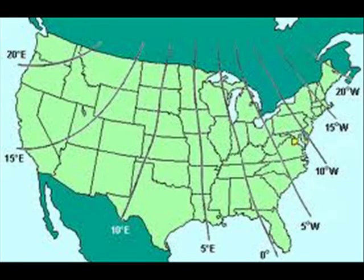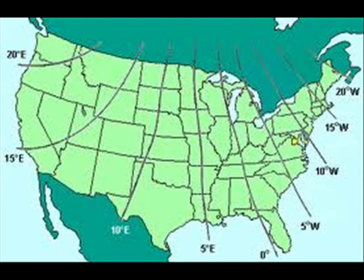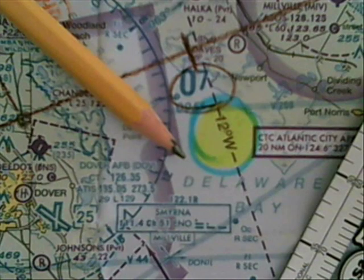Your next step is to compute your magnetic heading. Magnetic heading is true course corrected for variation. Remember: east is least and west is best. Isogonic lines are the magnetic, or purple dashed lines, on your sectional chart. On my sectional, it's 12 degrees west, as depicted here in this picture.